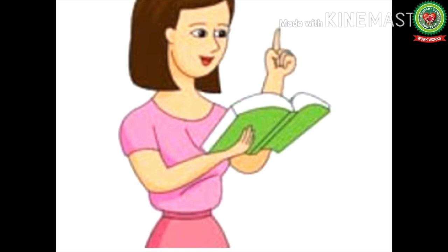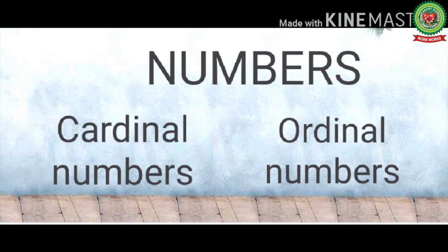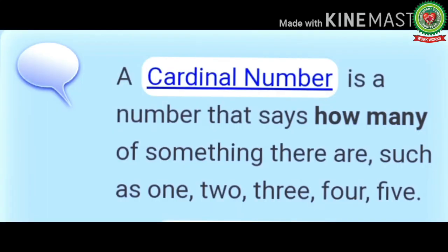Now let us revise what we have learned about ordinal numbers till now. Numbers are divided into two parts: cardinal numbers and ordinal numbers. A cardinal number is a number that says how many of something there are, such as 1, 2, 3, 4, 5, etc.